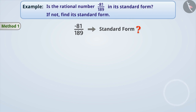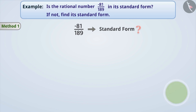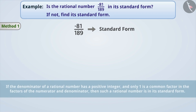Think! Absolutely right! If the denominator of a rational number has a positive integer and only 1 is a common factor in the factors of the numerator and denominator, then such a rational number is in its standard form.